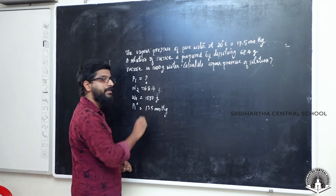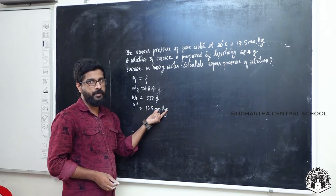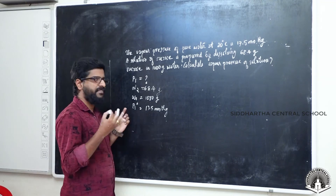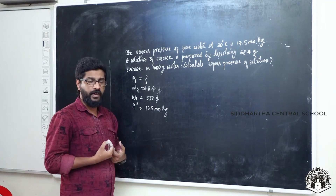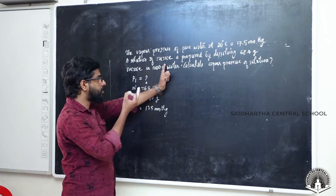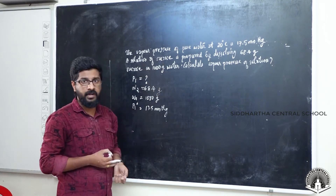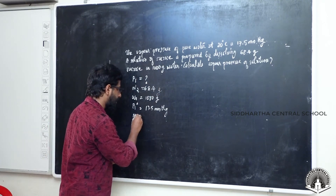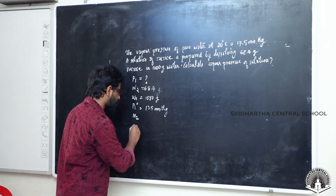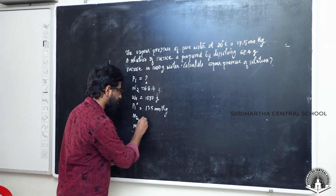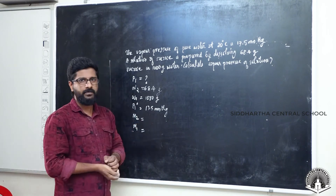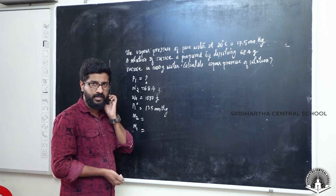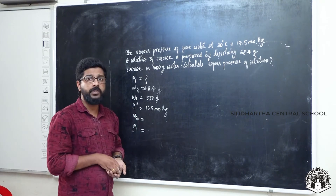mmHg stands for millimetre mercury — it is the unit of vapor pressure. We also need two more terms: M2 and M1, which must be calculated. M stands for molecular mass. First, M2 is the molecular mass of the solute.